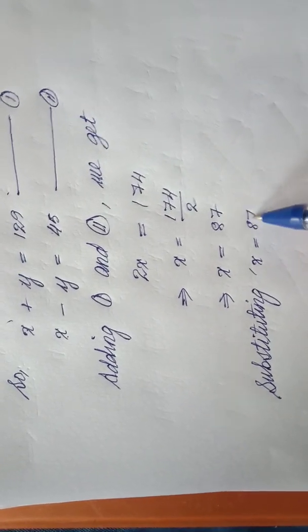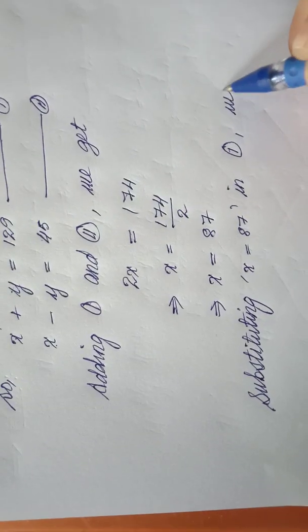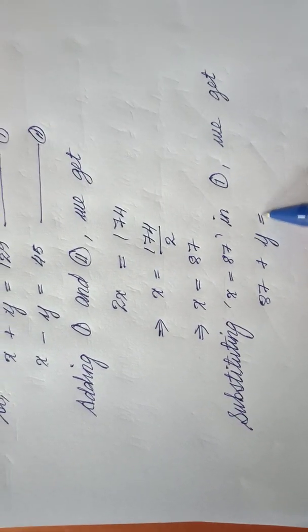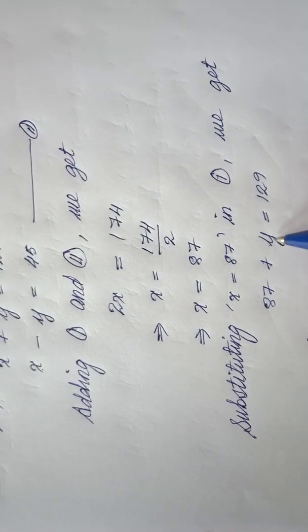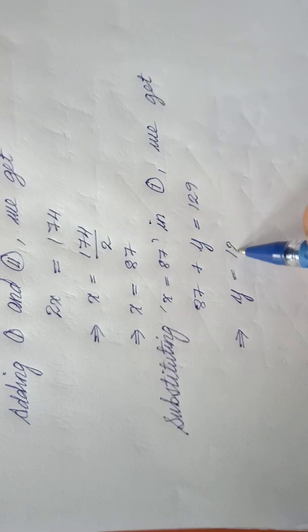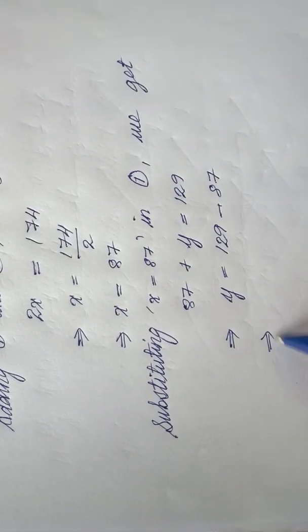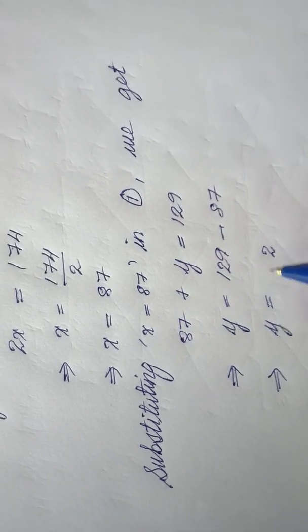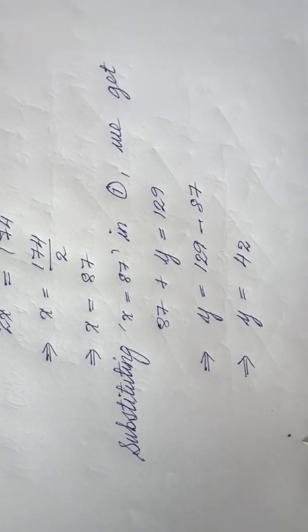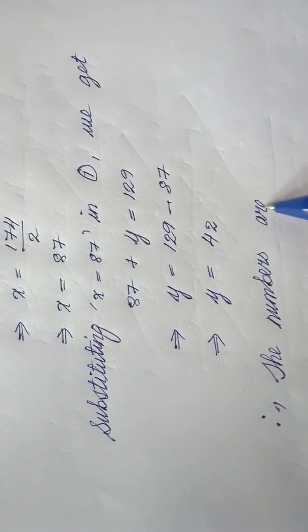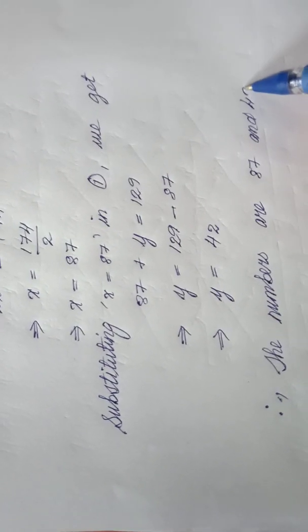Substituting x equals 87 in equation one, we get: equation one is x plus y equals 129. Instead of x I can use 87. 87 plus y equals 129, which implies constant terms are to be put together. y equals 129 minus 87, so y equals 42. Nine minus seven is two, twelve minus eight is four. The value of y is 42.